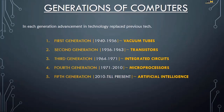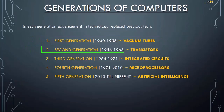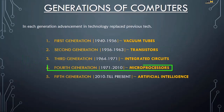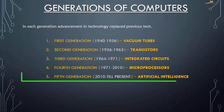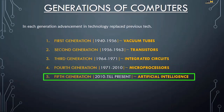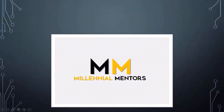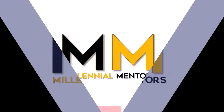These are the generations of computers: vacuum tubes in the first generation, transistors in the second generation, integrated circuits in the third generation, microprocessors in the fourth generation, and artificial intelligence in the fifth generation. That's all about this tutorial. Thank you.